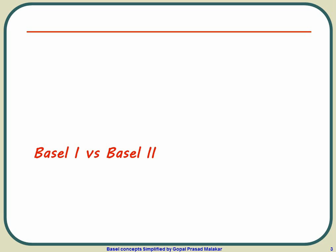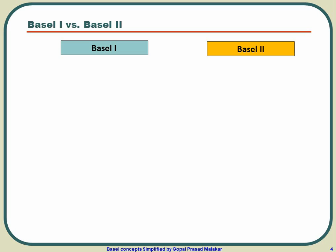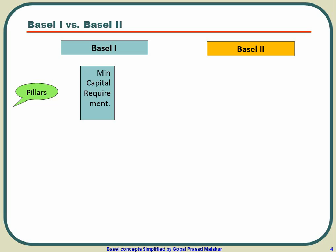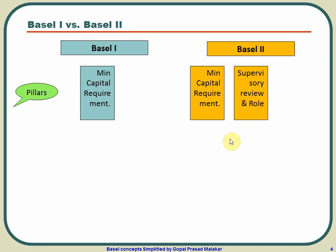Let me discuss Basel 1 vs Basel 2 side by side, because that way you will be very clear about what Basel 1 has and what Basel 2 has added and how it is different. Let's take a look at the pillars first. Basel 1 had only one pillar — minimum capital requirement — so that you can safeguard yourself against credit risk. Basel 2 has three pillars: minimum capital requirement, and two additional ones — supervisory review and market discipline and disclosure.